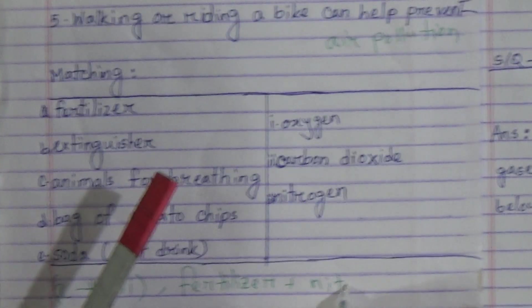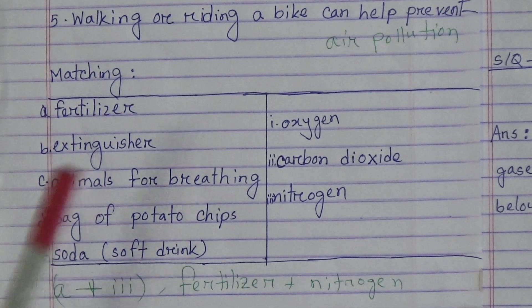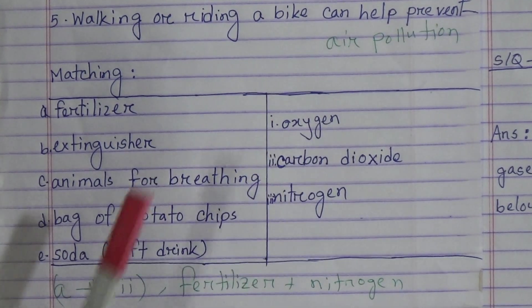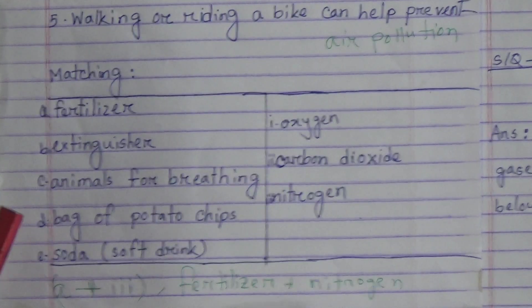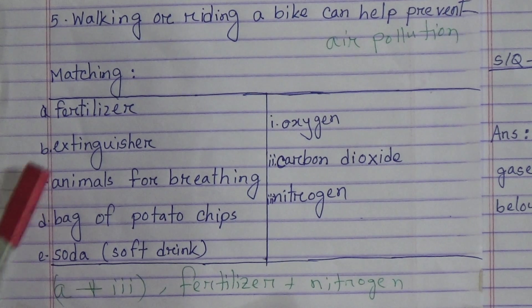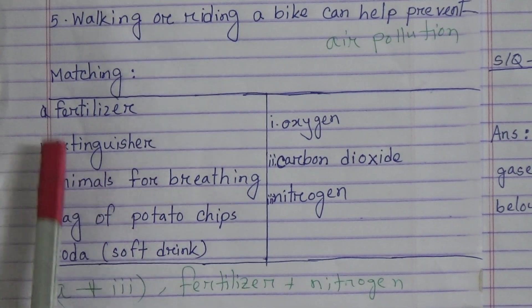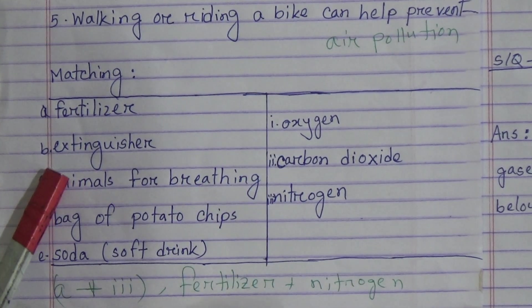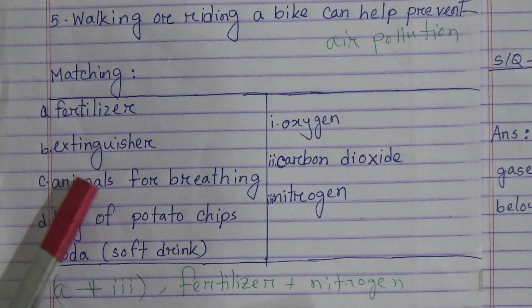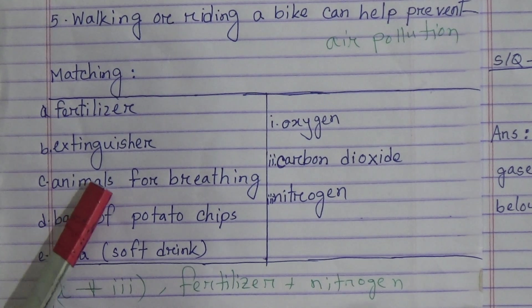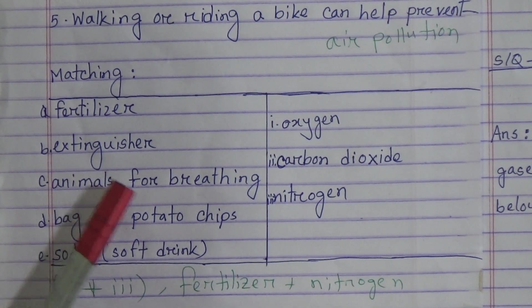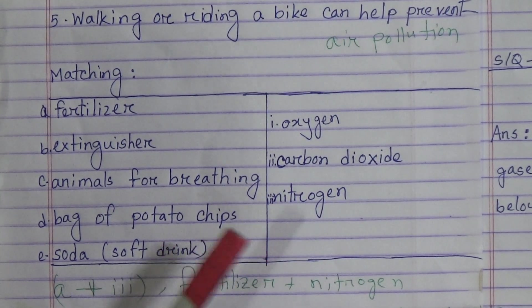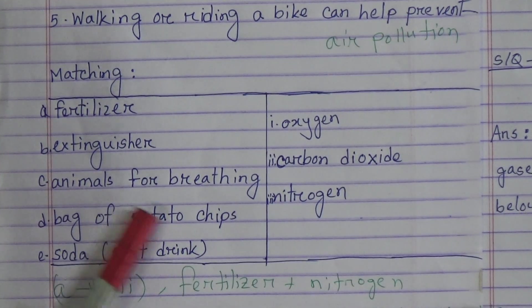Option B is extinguisher. Extinguisher will be matched with option 2, carbon dioxide. So write B plus 2: extinguisher plus carbon dioxide.